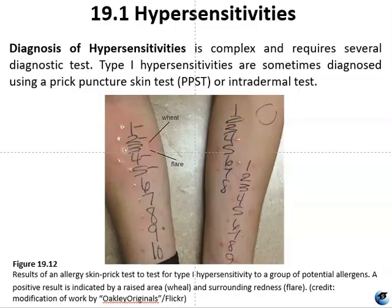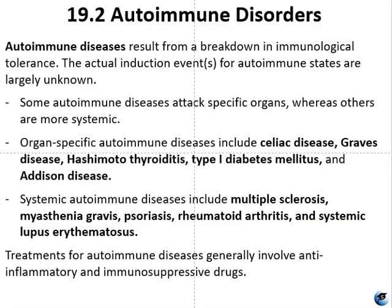Figure 19.12 shows an example of diagnosis of hypersensitivities. Diagnosis of type 1 hypersensitivities is complex and requires several diagnostic tests in addition to a well-documented patient history. Serum IgE levels can be measured, but elevated IgE alone does not confirm allergic disease. To identify the antigens responsible for type 1 reactions, a prick puncture skin test (PPST) or an intradermal test can be performed. The PPST is carried out by introducing allergens via a series of superficial skin pricks on the patient's back or arms, and is considered the most convenient and least expensive way to diagnose allergens.